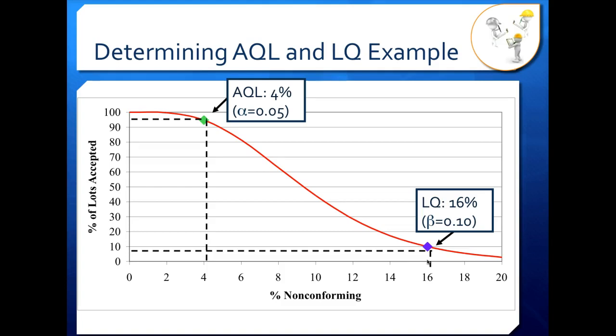One more thing to point out about AQL: it must be set so that it is less than or equal to C, our acceptance criteria for percent nonconforming lots. If our C was set to 2% — so we could have 2% nonconforming or fewer — and our AQL is above C, we are basically saying we can accept lots that fall outside our acceptance criteria. So when you're putting your sampling plans together, make sure your AQL is less than C.